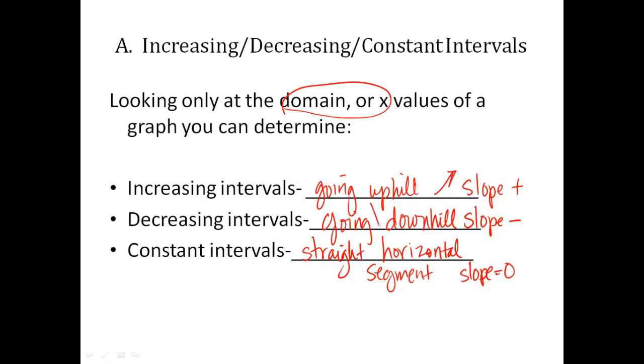Going uphill, going downhill, or a straight horizontal portion of the graph, that's a slope of zero. That's constant. Those are your three: increasing, decreasing, or constant.